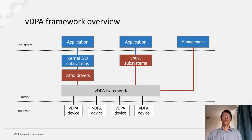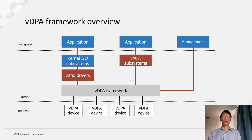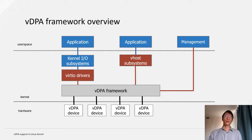Here is the overview of the VDPA framework. On the hardware level, there could be several types of VDPA device, which are all connected to the VDPA framework. And to the upper layers, it can choose to connect the VDPA device to both vhost subsystems and virtio drivers. When connected to the vhost subsystems, it will present a vhost device and let applications use the vhost UAPI to control the device as if it was a vhost device. And when connected to the virtio drivers, a virtio interface will be presented to the kernel I/O subsystems, so the applications can use any of the virtio UAPI supported by the kernel I/O subsystems to control the VDPA device as if it was a virtio device.